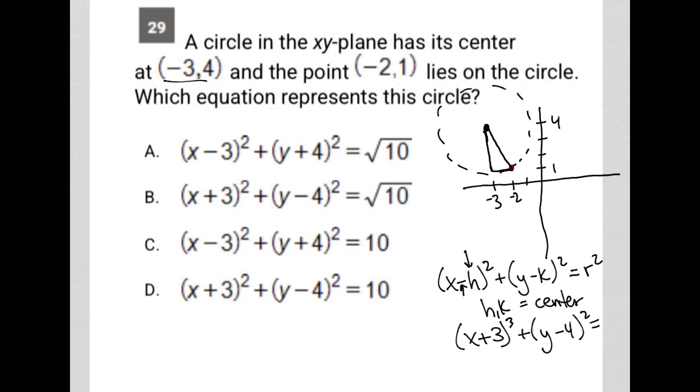So I know that this length here is from 4 down to 1, so that's 3 units. I know this length here is from -3 to -2, so that's 1 unit. So Pythagorean theorem tells me that 1² + 3² = c², the length between the center and the point on the circle.